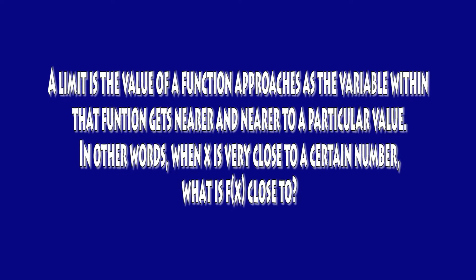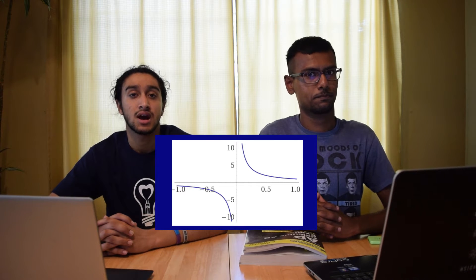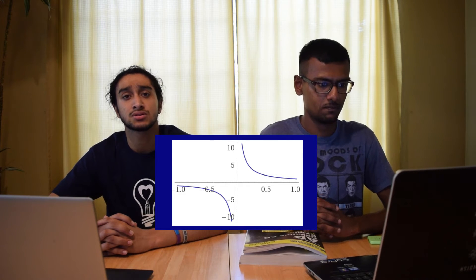Well, you're in luck, because this episode is on limits. You are indeed talking about limits. A limit is the value of a function that approaches the variable within the function — it gets nearer and nearer to a particular value. In other words, when x is very close to a certain number, what is the value of f of x? There are two types of limits: the left-hand limit and the right-hand limit. Let's look at an example. In this graph, 1 over x, as x approaches 0, the left-hand limit is going to negative infinity and the right-hand limit is going to positive infinity.